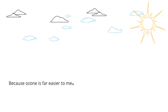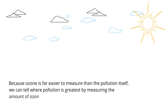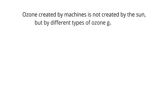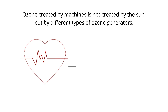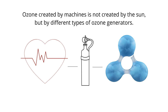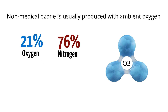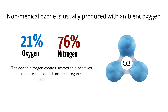Because ozone is far easier to measure than the pollution itself, we can tell where pollution is greatest by measuring the amount of ozone being created in the same area. Ozone created by machines is not created by the sun, but by different types of ozone generators. Medical grade ozone is produced with high-grade pure oxygen and consists of three simple oxygen molecules, or O3. Non-medical ozone is usually produced with ambient oxygen, which consists of 21% oxygen and 76% nitrogen. The added nitrogen creates unfavorable additives that are considered unsafe in regards to ozone therapy.